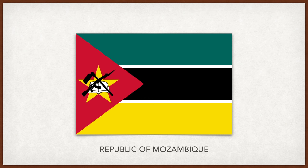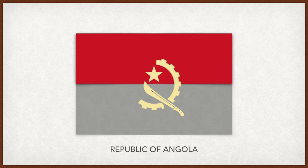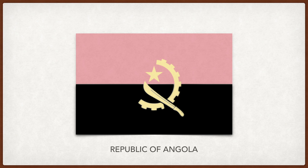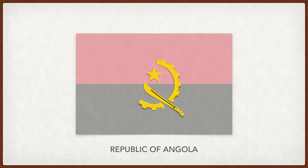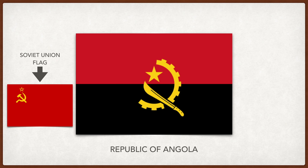Mozambique. The green stands for the land, the white signifies peace, black represents the African continent, yellow symbolizes the country's mineral wealth, and the red represents independence. The rifle stands for defense and vigilance, the open book symbolizes the importance of education, the hoe represents the country's agriculture, and the star symbolizes Marxism. Angola. Red is for the blood spilled for independence, black is for Africa. The half gear represents workers and industry, and the machete represents agriculture and armed struggle. The star represents Marxism, and the whole flag was supposed to evoke the hammer and sickle of the Soviet Union flag.